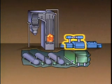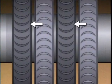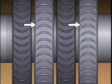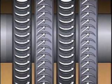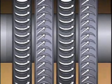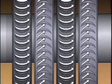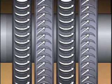Inside the turbine are two kinds of blades. The blades that are attached to the casing are called stationary blades. The blades that are attached to the turbine shaft are called moving blades. When the steam strikes the blades that are attached to the shaft, it causes them to move, which makes the shaft rotate. In the process, some of the energy in the steam is converted into mechanical energy in the turbine.